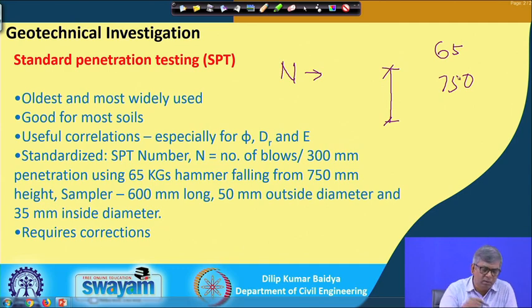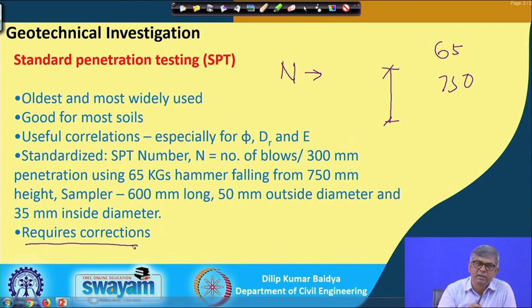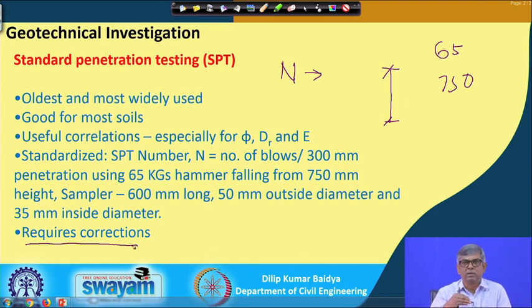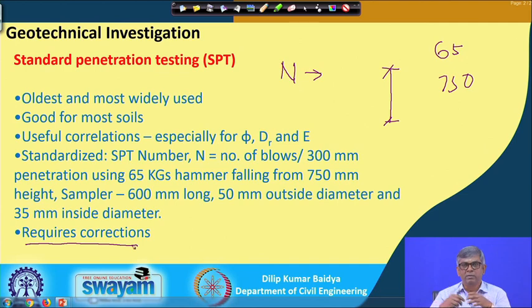The SPT test also requires some corrections. Whatever blow count we get in the field — for example, 12 blows for 300 millimeters penetration — that is called the field N value. Later on, we have to adjust or correct for several things because, even though the test is standardized, how the weight is lifted and allowed to fall depends on the rod length connected and other factors. After applying the corrections, the result is called the corrected N value, N-corrected.